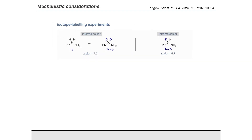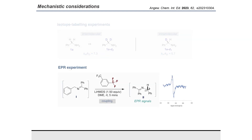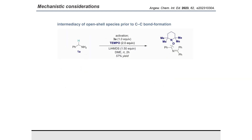We then performed some experiments to shed light on the plausible mechanism for our transformation. Both intermolecular and intramolecular isotope labeling experiments showcased a primary kinetic isotope effect (KIE), which indicated that deprotonation should be involved in the rate-determining step. Moreover, EPR signals could be observed during this reaction, which indicated the radical nature of this transformation. Additionally, the nitrogen-centered alpha-amino radical could also be observed when using a radical spin-trapping reagent, showcasing the intermediacy of open-shell species prior to C-C bond formation.